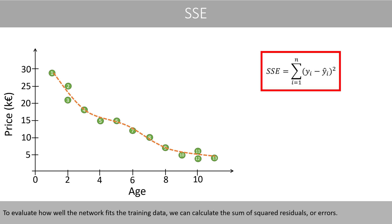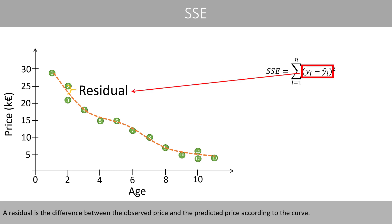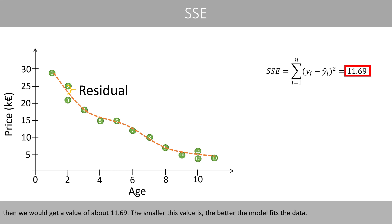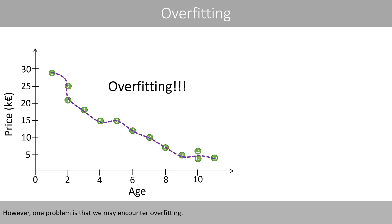To evaluate how well the network fits the training data, we can calculate the sum of squared residuals or errors. A residual is the difference between the observed price and the predicted price according to the curve. If we sum all the squared residuals, we get a value of about 11.69. The smaller this value is, the better the model fits the data. However, one problem is that we may encounter overfitting.